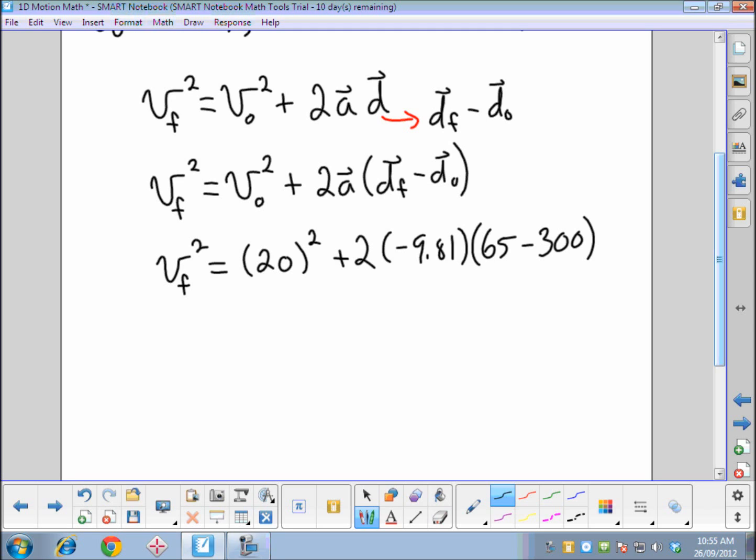We have vf² = 20 squared is 400. And then I'll work this out to be a positive 4610.7. So once again, inside of the brackets here, worked out to be negative 235. That negative 235 multiplied by the negative 9.81 gave us a positive, and then double that at the end to give us our 4610.7. Add both of those together, and we get 5010.7.